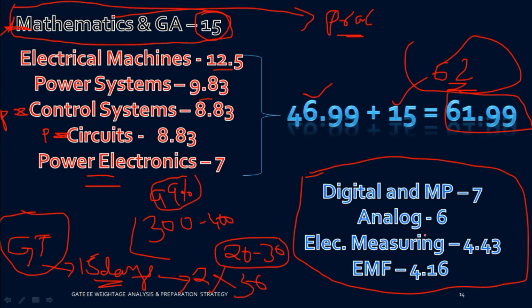If you feel you have less time, don't worry — you still have enough. Complete the six core subjects and you can score around 62 marks, which gives good chances for IITs and PSUs. Follow this strategy: six core subjects thoroughly, then 20 to 30 grand tests over 15 days. The four subjects you can deprioritize are Digital Electronics, Analog Electronics, Electrical Measuring Instruments, and Electromagnetic Fields — cover these during grand tests.